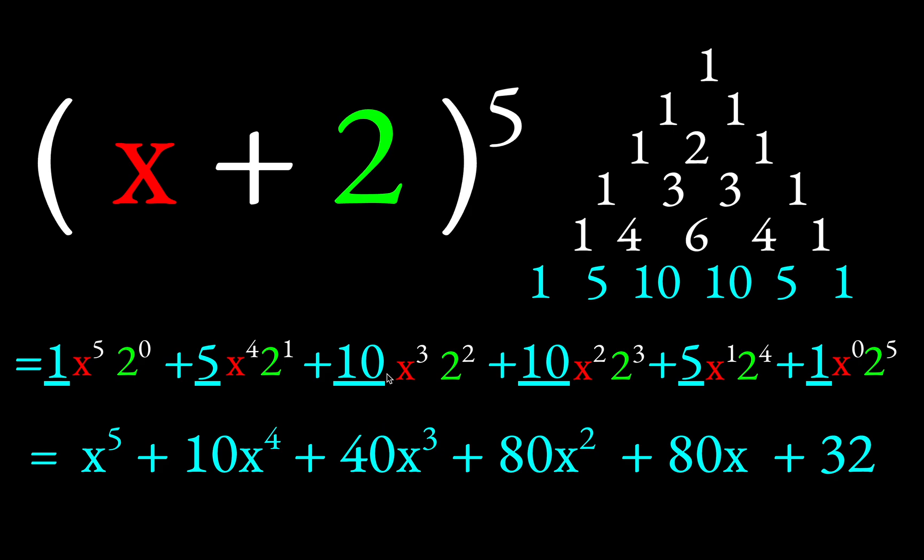In this next term, we get a 40 because you have 10 times 2 squared. And in the next term, you get an 80 because you have 10 times 2 cubed, which is 8. Well, 10 times 8 is 80.